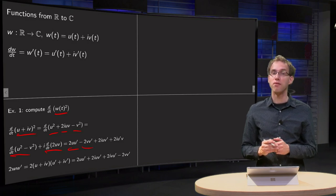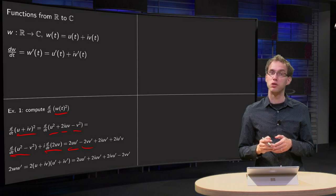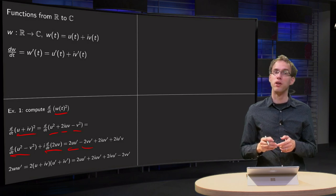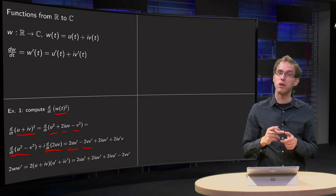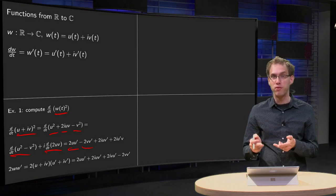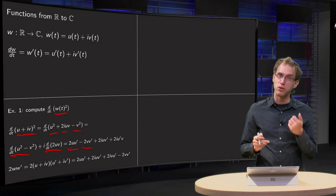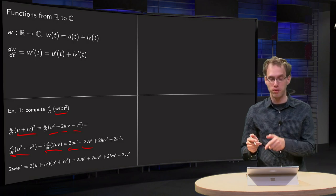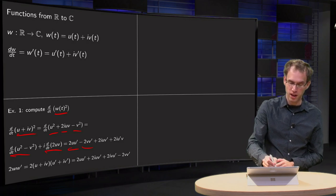And for d/dt of 2·u·v, we use the product rule: we get 2·u′·v + 2·u·v′, times i. So there we are.